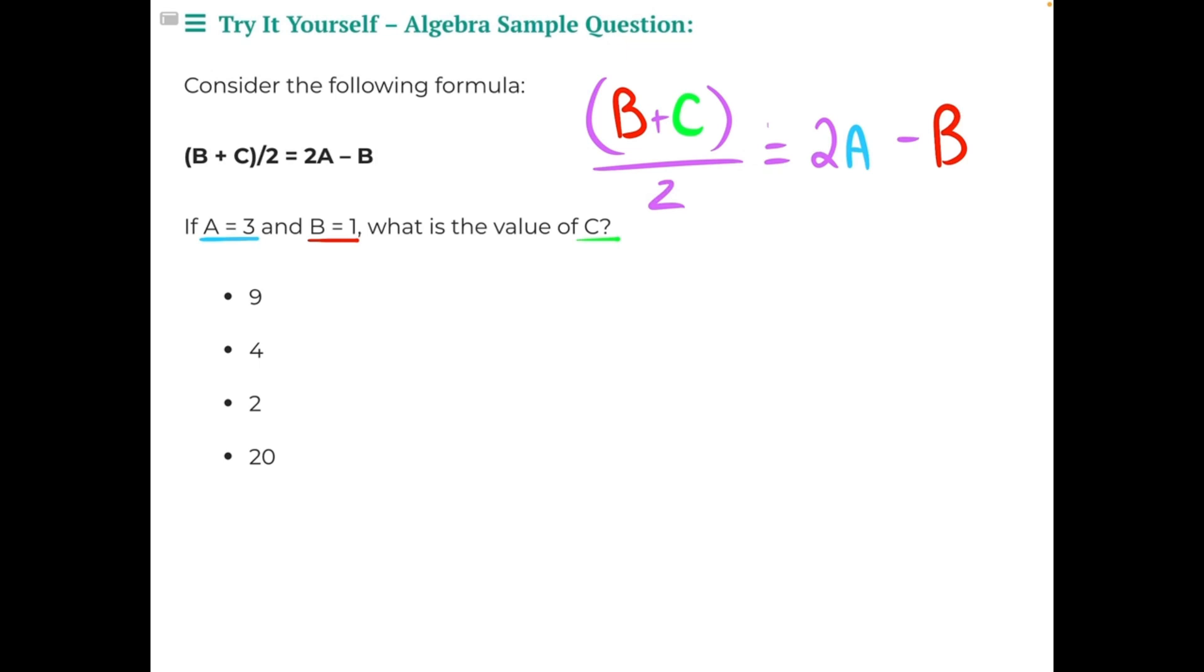To find the value of c, we need to perform a series of substitutions where we substitute 3 in for all of the a's in our equation and substitute 1 in for all of the b's of our equation. Then we can use order of operations and opposite operations to isolate our variable and find the value of c. So let's start by doing some substitutions.